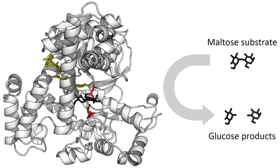A noncompetitive inhibitor binds to a site other than where the substrate binds. The substrate still binds with its usual affinity and hence Km remains the same. However, the inhibitor reduces the catalytic efficiency of the enzyme so that Vmax is reduced. In contrast to competitive inhibition, noncompetitive inhibition cannot be overcome with high substrate concentration. An uncompetitive inhibitor cannot bind to the free enzyme, only to the enzyme-substrate complex; hence these types of inhibitors are most effective at high substrate concentration. In the presence of the inhibitor, the enzyme-substrate complex is inactive. This type of inhibition is rare.